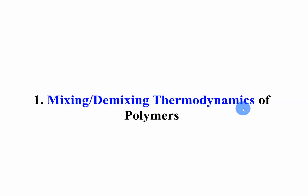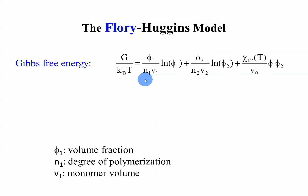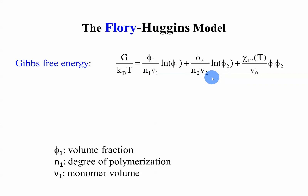The mixing-demixing thermodynamics of polymer blends — the Flory-Huggins model. This is for polymer blend mixtures. The Gibbs free energy has two contributions: one is entropy and one is enthalpy interaction. V1 is the volume fraction of component 1 in the blend, N1 is the degree of polymerization, and V1 is the monomer volume. This is sometimes used for polymer solutions as well, though it is not as correct as for polymer blends. For polymer solutions, the degree of polymerization of component 2 becomes 1 because it is a solvent. Using this Gibbs free energy, one can talk about phase diagrams, phase boundaries, demixing, and so on.